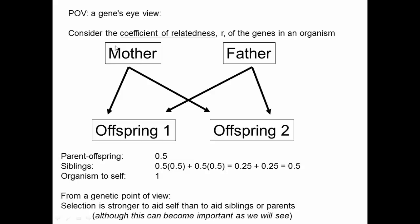The reverse direction also works: an allele in the mother has a 0.5 probability of being in any particular offspring. What about siblings? If there's an allele in one individual, there's a 50% chance it's in the mother, and if it's in the mother, there's a 50% chance she passed it to the sibling — so 50% times 50%. The other way the gene could be shared is through the father: 50% chance it comes from the father, and 50% chance the father passed it to the sibling. So 25% plus 25% gives us 50%. An allele in one sibling has a 50% chance of being in the other sibling, meaning siblings are genetically as related to each other as they are to any individual parent. And of course any organism is fully related to itself — the probability that an allele is in the same individual is 1.